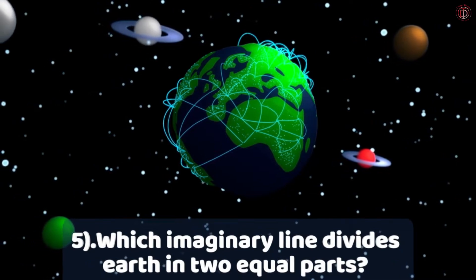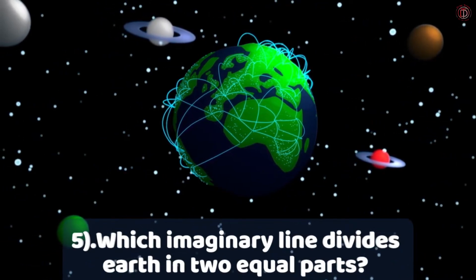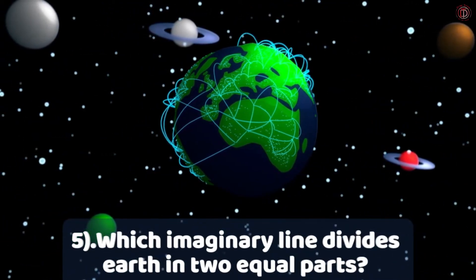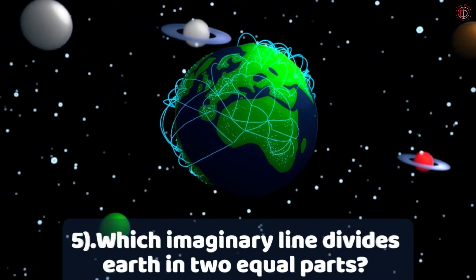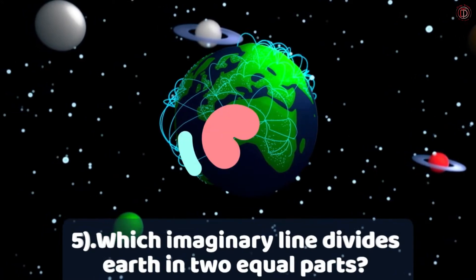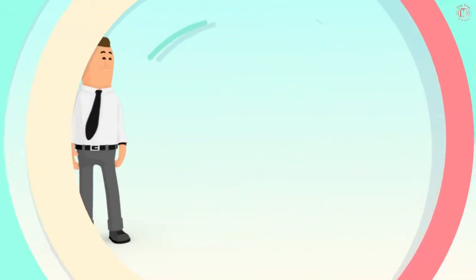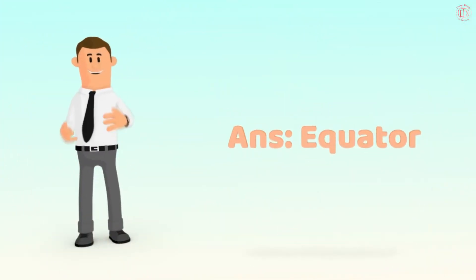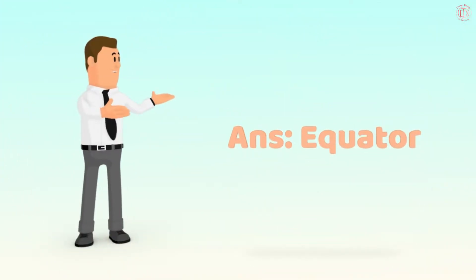Which imaginary line divides the Earth into two equal parts? A very easy question for you all, right? Let's see the answer — the answer is the Equator.